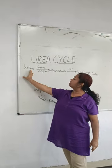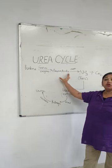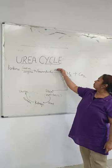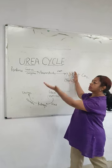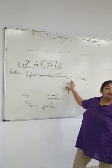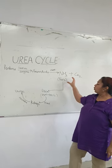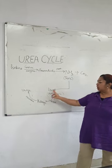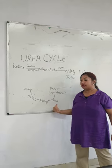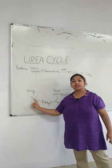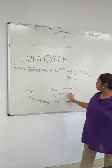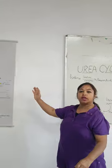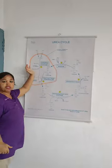Proteins are degraded into amino acids with the help of salivary and gastric enzymes. Then they are metabolized into ammonia through the urea cycle. But ammonia is very toxic in nature, so it is converted into urea which is non-toxic. Urea then enters the kidneys through blood and is excreted in the urine. We will now see how ammonia is converted into urea through the urea cycle.